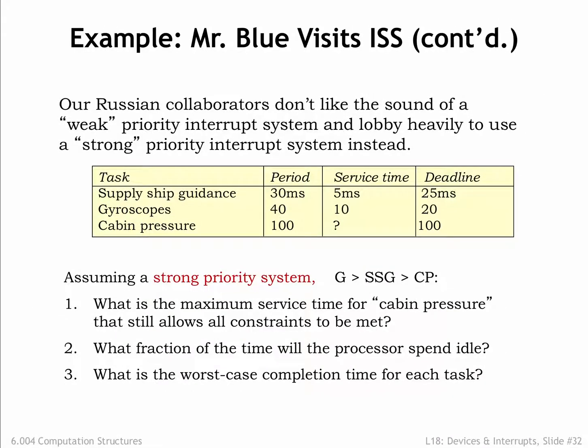Let's redo the problem, this time assuming a strong-priority system where, as before, G has the highest priority, SSG the middle priority, and CP the lowest priority. What is the maximum service time for CP that still allows all constraints to be met? This calculation is different in a strong-priority system, since the service time of CP is no longer constrained by the maximum allowable latency of the higher-priority tasks.